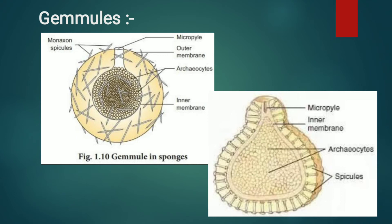Now we see the gemmules of sponges. Gemmules are asexually reproductive bodies of freshwater and a few marine sponges. These are formed in hot and cold weather to resist unfavorable conditions like drought or cold.